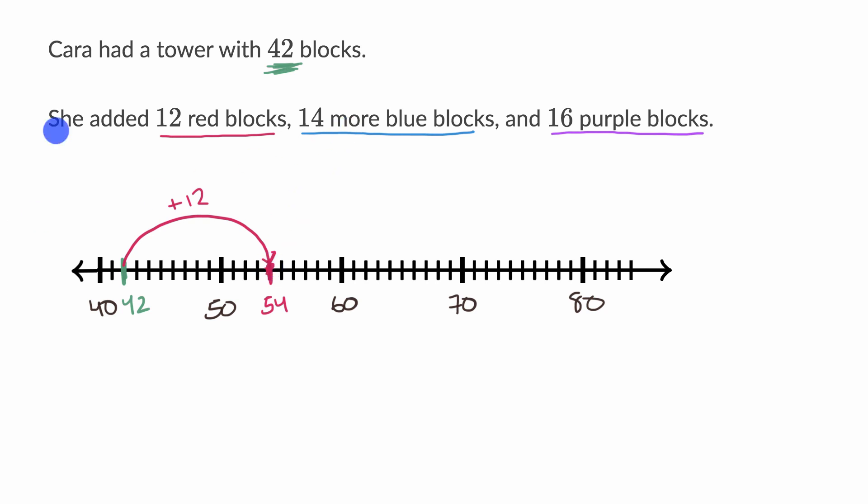And then we need to add those 14 more blue blocks. So let's add 14 from here. Counting one, two, three, four, five, six, seven, eight, nine, ten, eleven, twelve, thirteen, fourteen gets us right over there. So we add another 14, we get over there. And now what number are we at? Well, you can see that we are one, two, three, four, five, six, seven, eight above 60, which would tell us we're at 68. Or you could see that we are two below 70, which would also be 68.